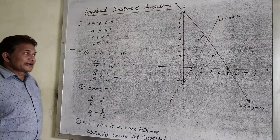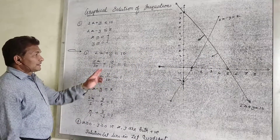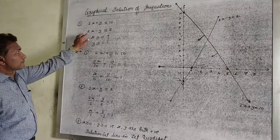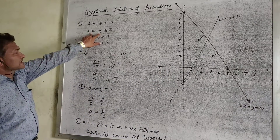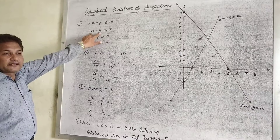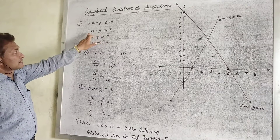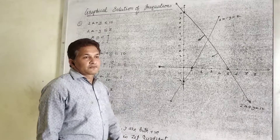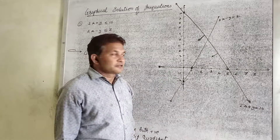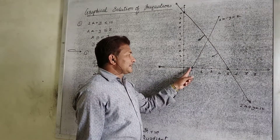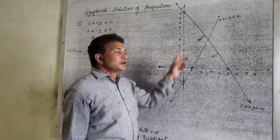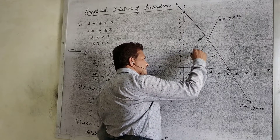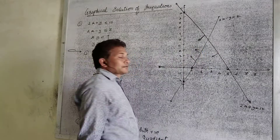Now for the second line, take the origin test. For the second condition, x is 0, y is 0. So therefore we get 2(0) minus 0 equal to 0, which is less than 2. It is correct, so origin satisfies. Therefore, for the second line, the origin is on the correct side. The solution set lies in the origin direction — meaning on the origin side of the second line.